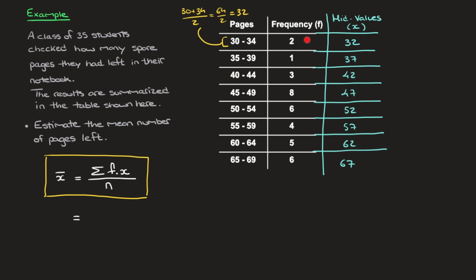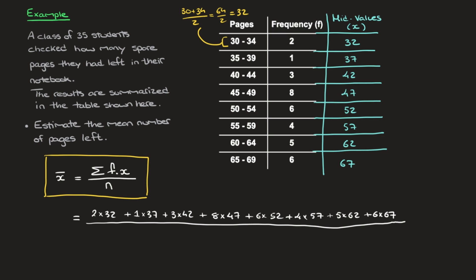So the mean is equal to (2×32 + 1×37 + 3×42 + ... + 6×67) divided by the total number of values. We were told there were 35 students. If you're ever not told how many values there are, add a total row at the bottom of the frequency column — adding up 2 + 1 + 3 + 8 + 6 + 4 + 5 + 6 gives 35. So the denominator is 35.